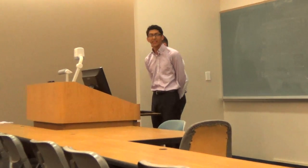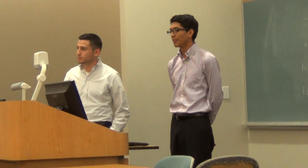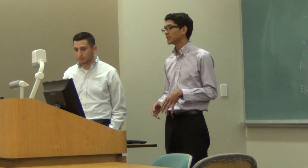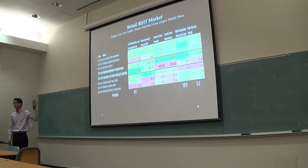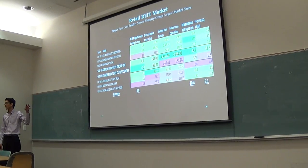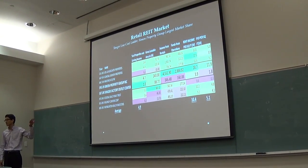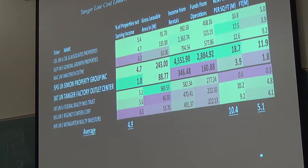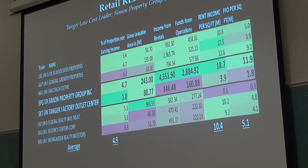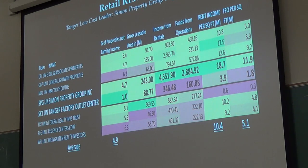We took a look at the vacancy rate — the percent of properties currently not earning income. Tanger has the lowest at 1%, whereas the other options are a little higher. That indicates there's a lot of demand for the retail space they rent out. They actually have a waiting list for their properties as well.